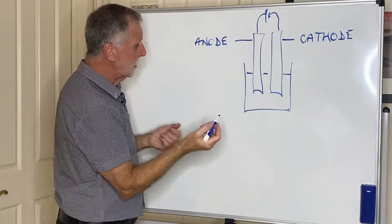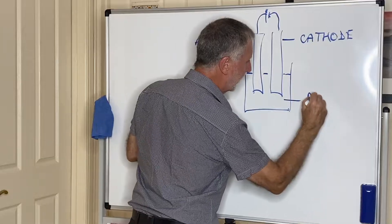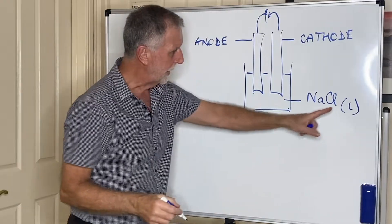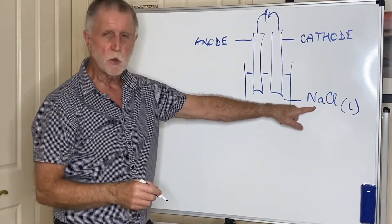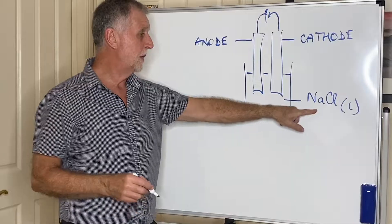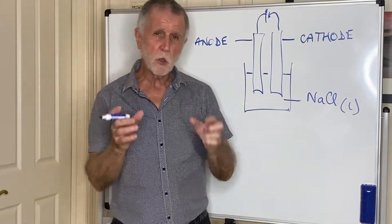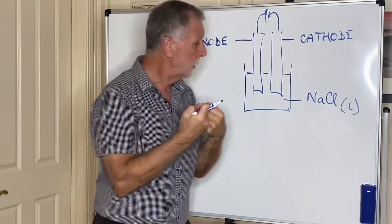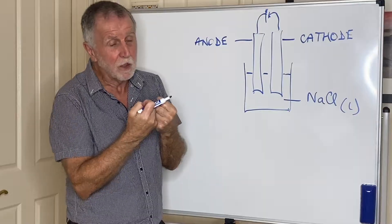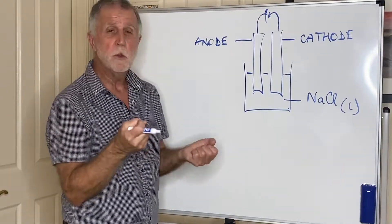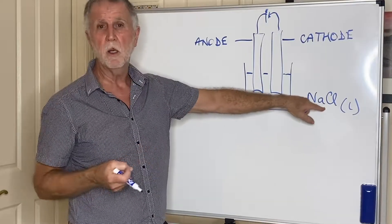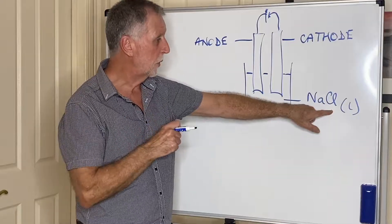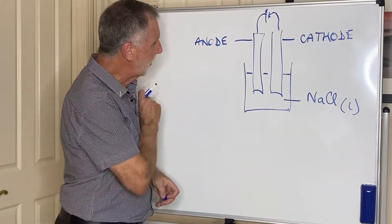Let's say we have in here some sodium chloride, and we're going to put it molten. So I put an L there to indicate that I've melted the sodium chloride. You might say, why are you going to melt it? Well, remember, ionic compounds have ions which are very, very strongly held together by ionic bonds. If you want those ions to move, you need to either break the bonds using heat, like melting, or you can dissolve it in water.